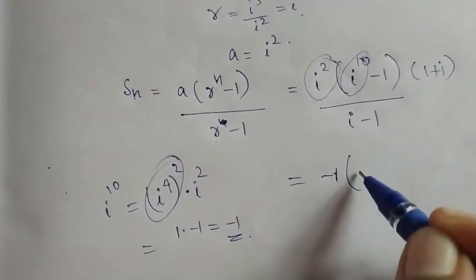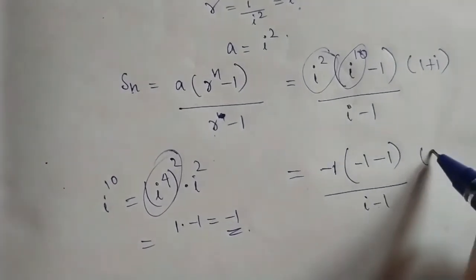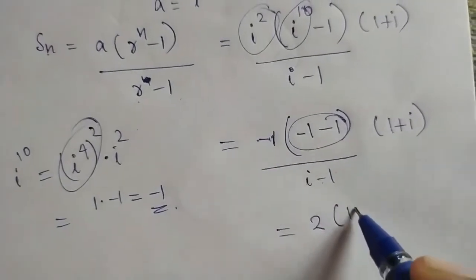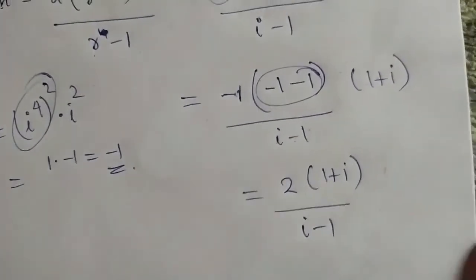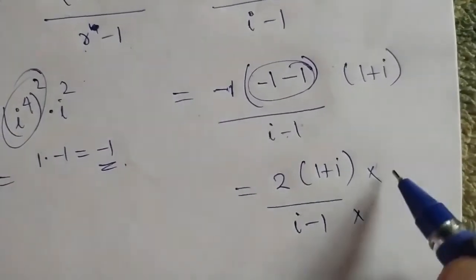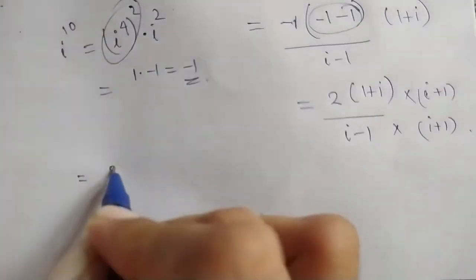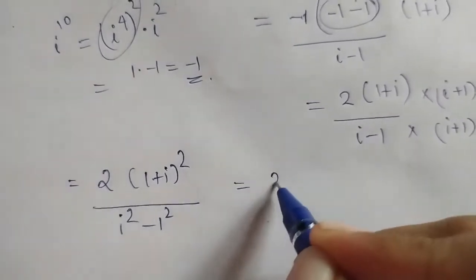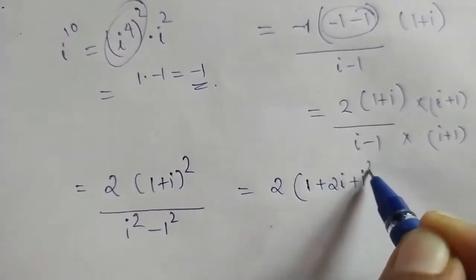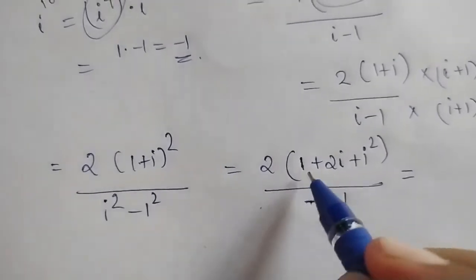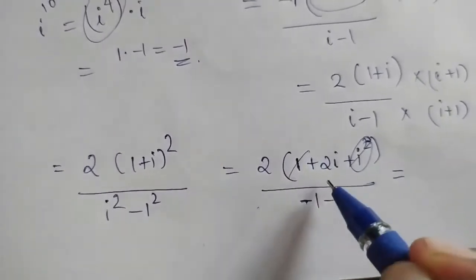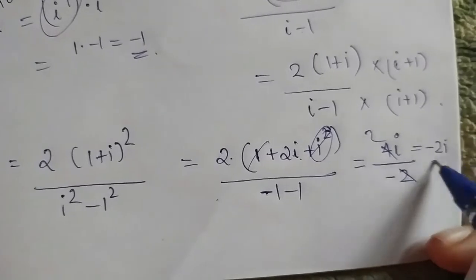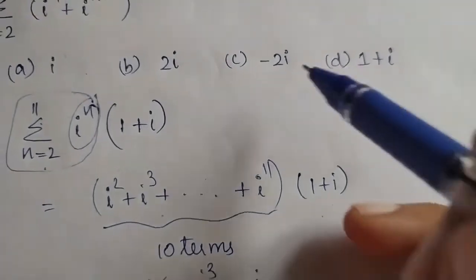Applying the GP formula, we simplify and get minus 2 into minus 1 into 1 plus i divided by i minus 1, giving 2 into 1 plus i over i minus 1. Rationalizing by multiplying by i plus 1, the numerator becomes 2 into 1 plus i whole squared and denominator becomes i squared minus 1 squared. Expanding: 2 into 1 plus 2i plus i squared over minus 1 minus 1 gives 2 into 2i over minus 2, which is minus 2i. However, this did not match any of the given options.